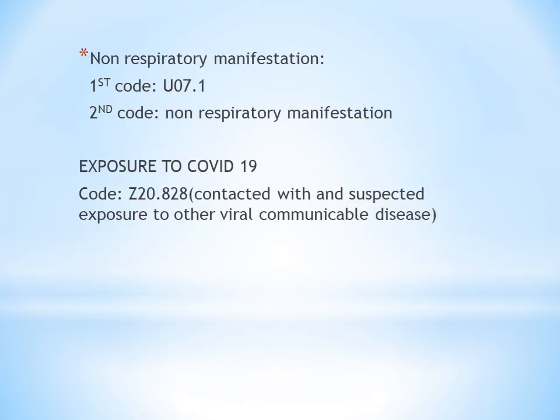The next topic is non-respiratory manifestations. We've seen examples of respiratory manifestations; now for non-respiratory manifestations of COVID-19 — for example, viral enteritis. In this case we follow the same sequence: first the COVID-19 positive code U07.1, then the non-respiratory manifestation code.